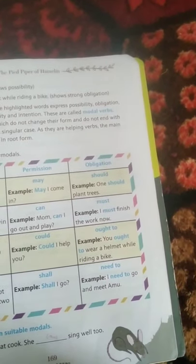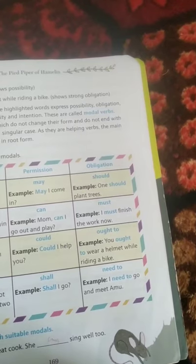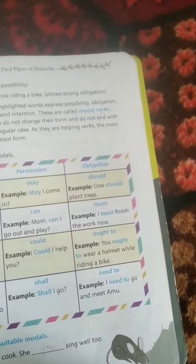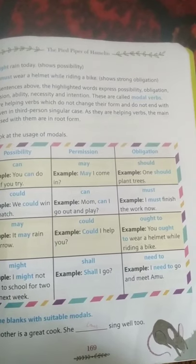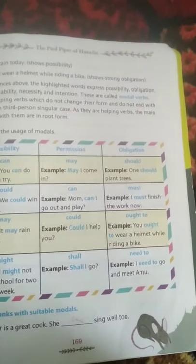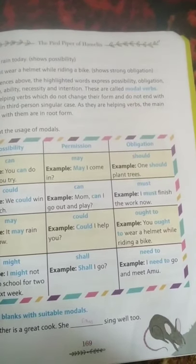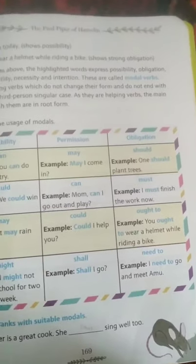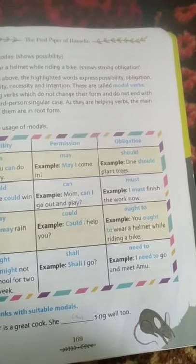For obligation: 'One should plant trees.' Notice that 'should' remains the same even when we change the subject — 'I should plant trees,' 'they should plant trees.' For must: 'I must finish the homework now,' 'she must finish the homework now,' 'they must finish the homework now' — must does not change. 'Ought to' is also used in place of 'must': 'You ought to wear a helmet while riding a bike.' 'Need to' is also used: 'I need to go and meet him,' but in third person: 'She need to go and meet him.'